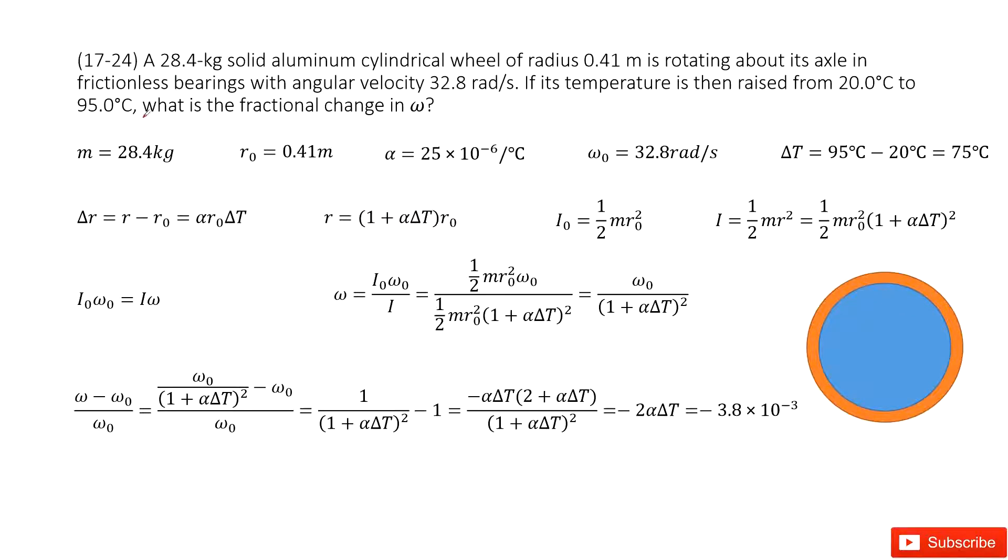First one tells us the mass of this cylindrical wheel, and then the initial radius and the initial angular velocities here. Temperature changes from 20 degrees to 95 degrees. We can get a change of 75 degrees.